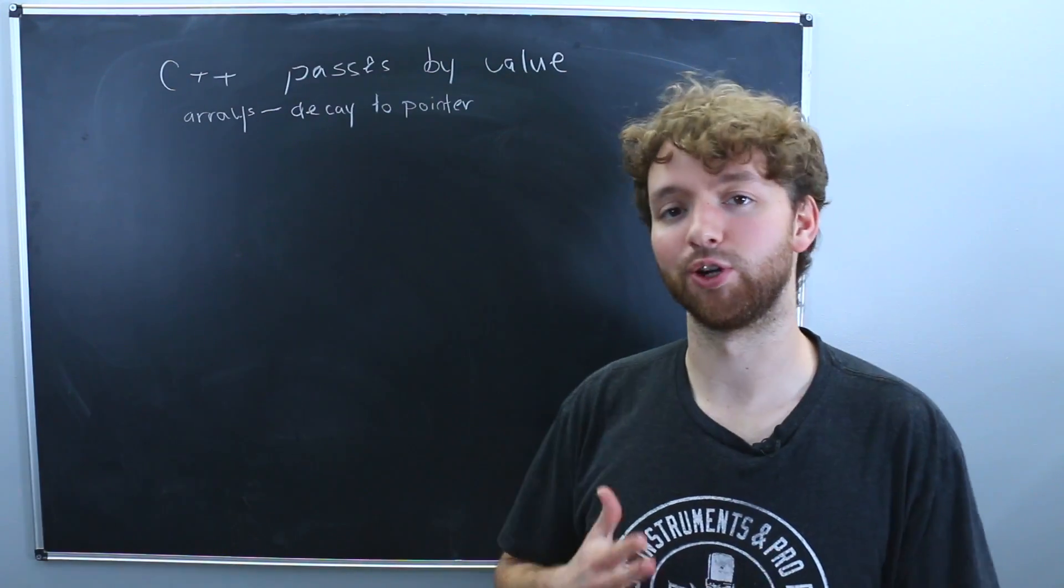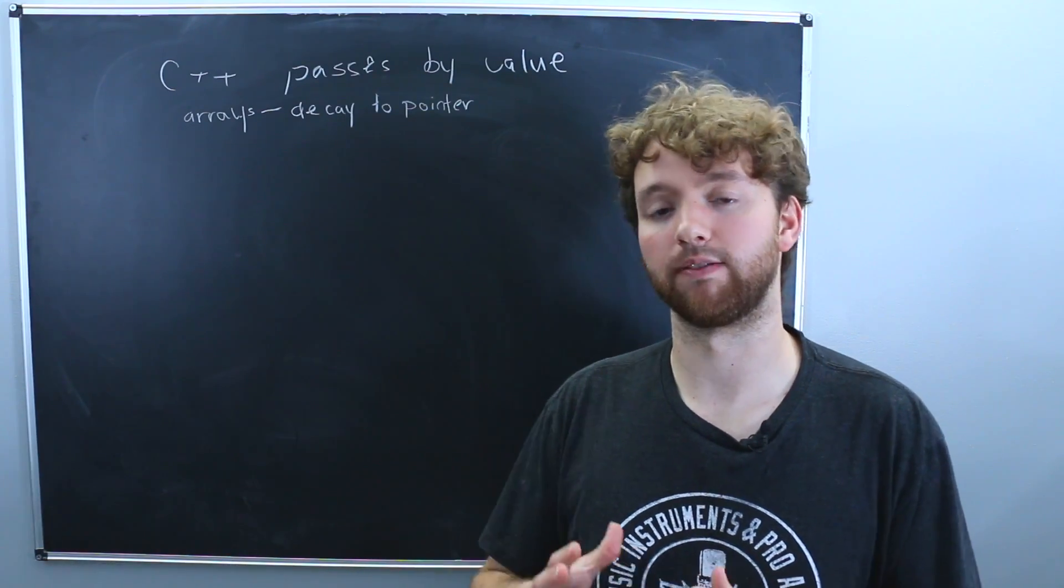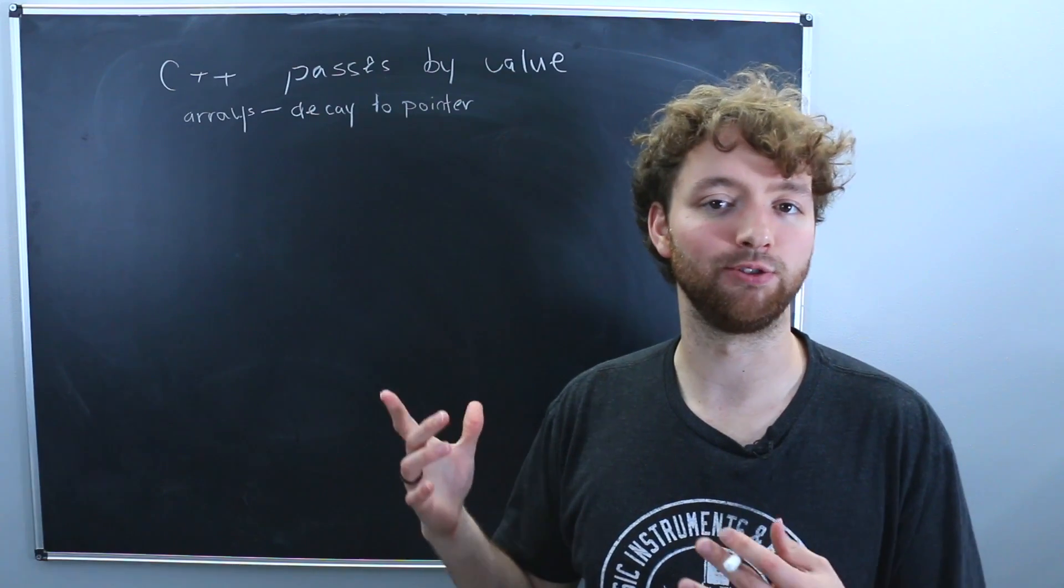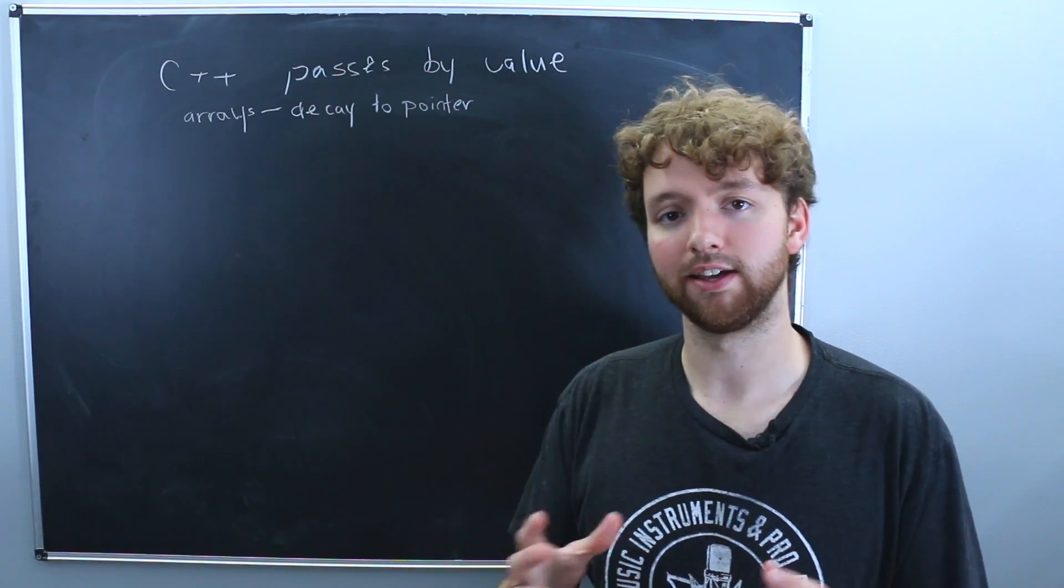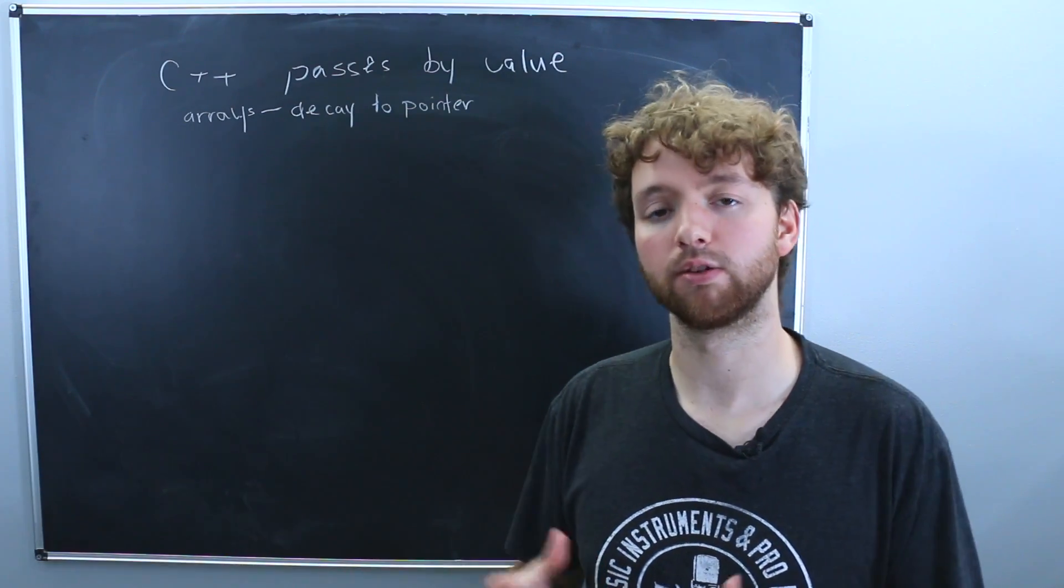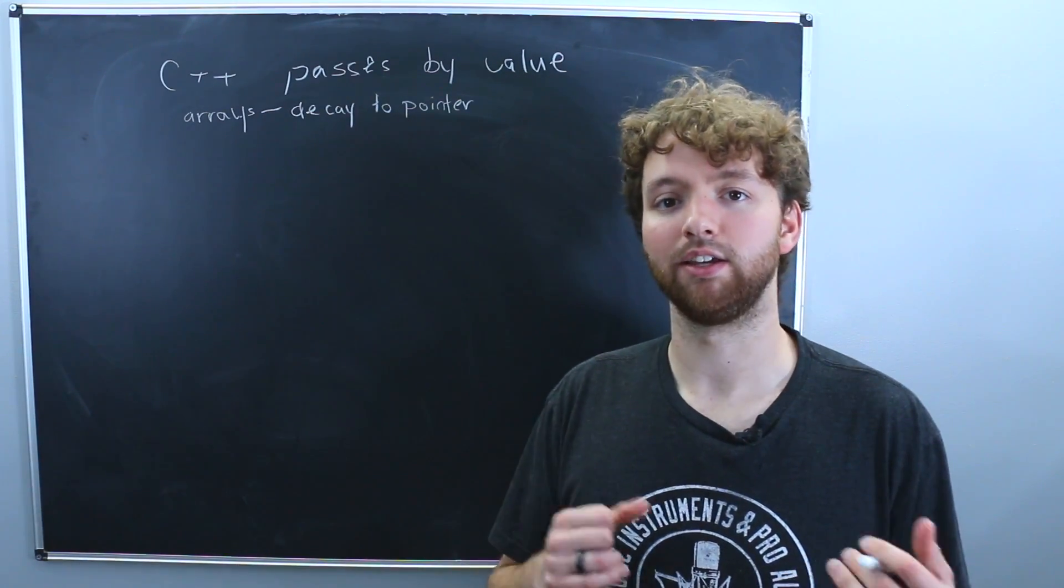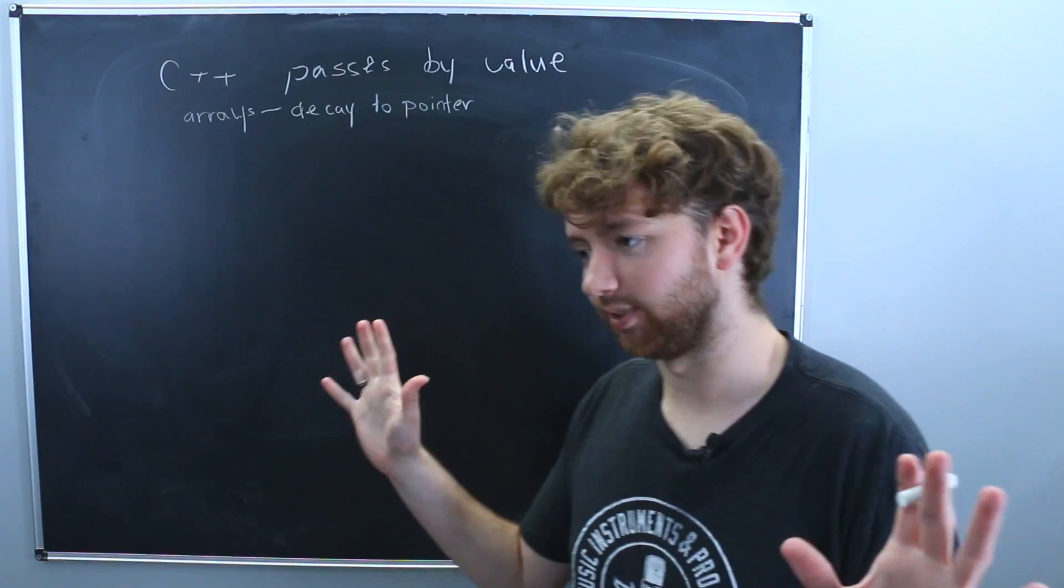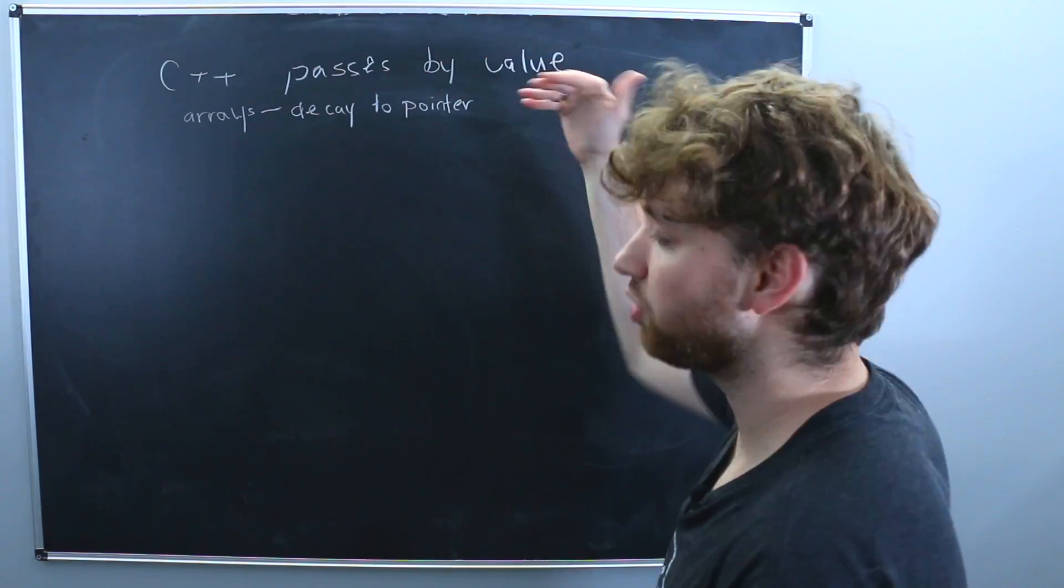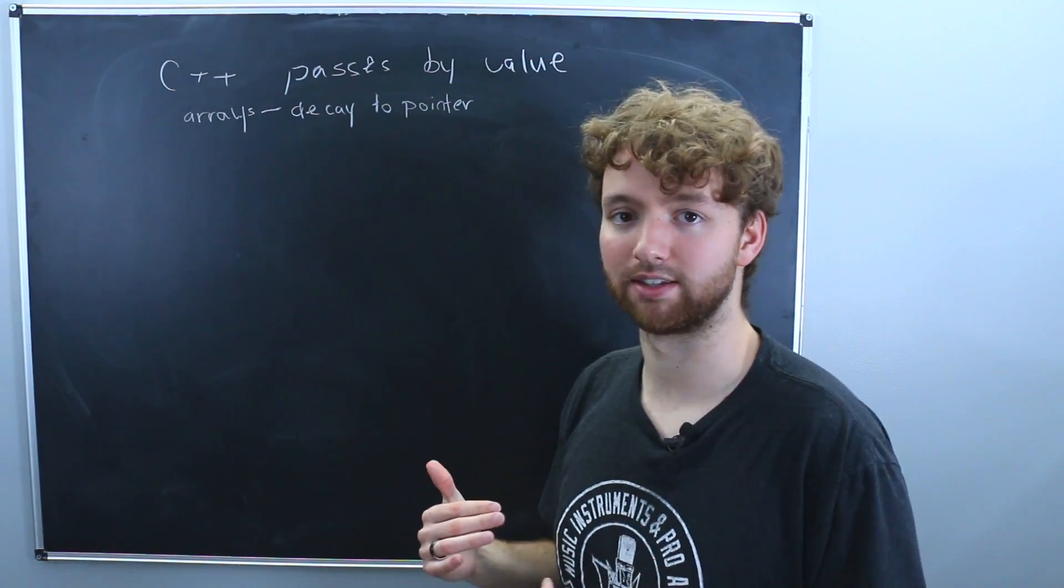So just watch out for that. You don't have to do anything too crazy, though. You're going to work with the arrays in the same way. The only thing is you're not going to have that length data like you might like. If you need that, then you can define your functions to take an additional argument of how long the array is. Or you could use a data type such as a vector, which can keep track of that even when it's passed to a function. But I'm not getting into the details right now. So let's just focus on pass by value, what that means, and then some of the variations that we can do inside of C++.